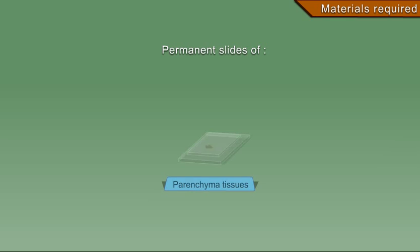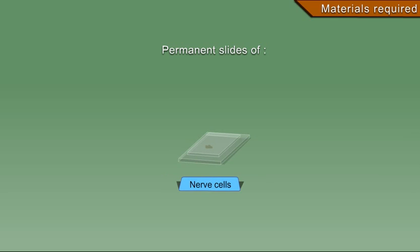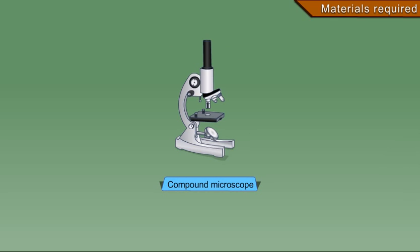Materials required: permanent slides of parenchyma tissues, sclerenchyma tissues, striped muscle fibres and nerve cells, and a compound microscope.